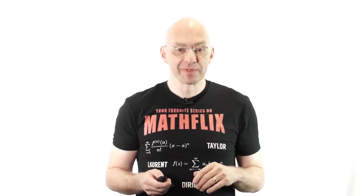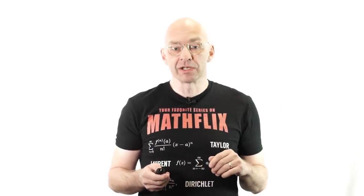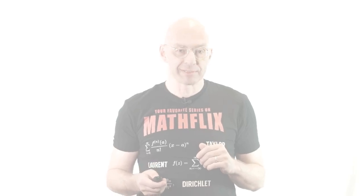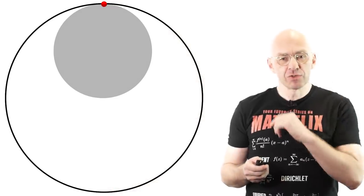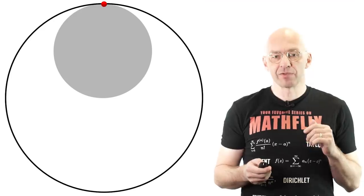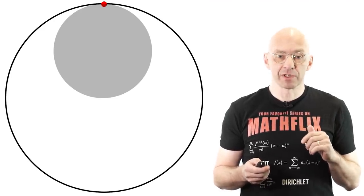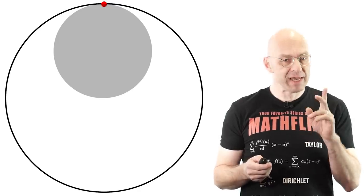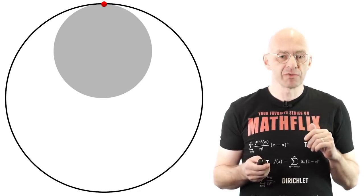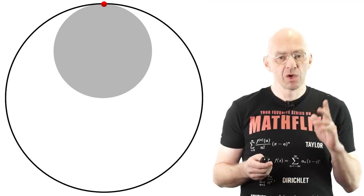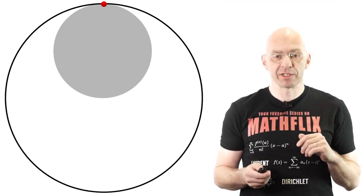Welcome to another Mathologer video. As a gentle intro to what I'll do today, here's a bit of a warm-up exercise. Here are two circles, the smaller one half the radius of the larger one. The red dot marks a point on the circumference of the smaller circle. Now imagine that the smaller circle rolls around inside the larger one. What curve will be traced by the red dot?